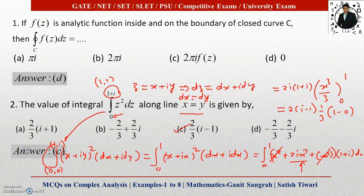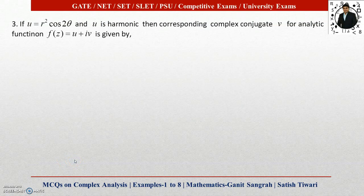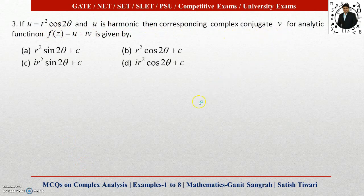This is how we evaluate a complex integral. Now question three: if u = r² cos 2θ and u is harmonic, then the corresponding complex conjugate v for the analytic function f(z) = u + iv is given by — four options are provided. The complex conjugate v is generally similar but never the same as u.